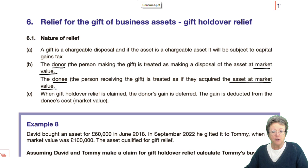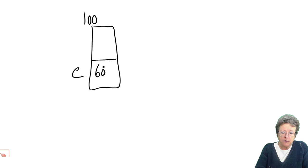Very similar to rollover relief. For example, if we have an asset worth £100,000 with a cost of £60,000, if we gifted it, the gain would be £40,000. So it's a gift of an asset.